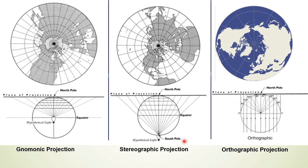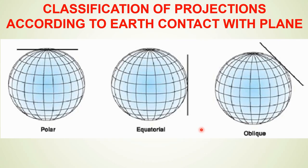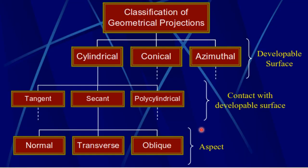Generally, only one hemisphere or a portion of it is represented in azimuthal projection. The classification of geometrical projections is basically three types: cylindrical, conical, and azimuthal — based on developable surface. On the basis of contact with the developable surface, projections may be tangent, secant, or polycylindrical. All three types can again be classified by aspects as normal, transverse, and oblique.